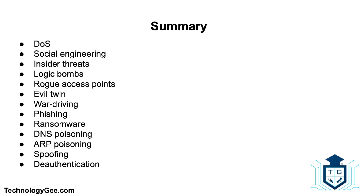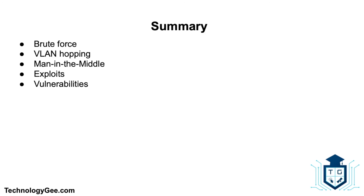In summary, we've talked about networking attacks such as denial of service, social engineering, insider threats, logic bombs, rogue access points, evil twins, war driving, phishing, ransomware, DNS poisoning, ARP poisoning, spoofing, de-authentication, brute force attacks, VLAN hopping, man in the middle attacks, exploits, and vulnerabilities. If you found this valuable, hit the like and share buttons, drop a comment, and most importantly subscribe. Also check out my website Technology G to get the latest information to help you successfully pass the CompTIA Network Plus N10-007 certification.